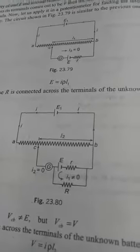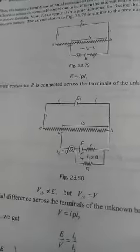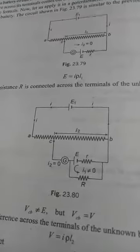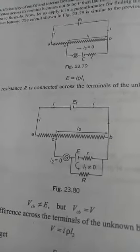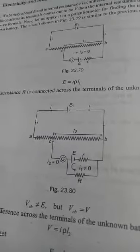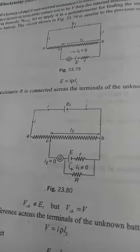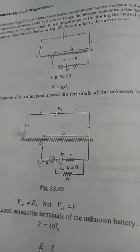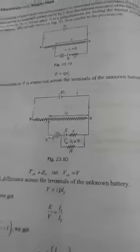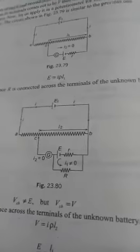So in the second case, Vcb will not be equal to E. Vcb actually will be equal to capital V, why? Because you added another resistance in parallel. So you can get an expression for V.